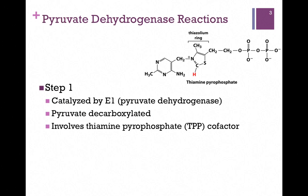Here we have step one. It is catalyzed by the first enzyme in this complex, simply referred to as E1. The name of the enzyme is pyruvate dehydrogenase, and that's where the name of the complex comes from. The only name you need to know in this process is this enzyme, and therefore the name of the complex, pyruvate dehydrogenase. The other enzymes we'll simply refer to as E2 and E3. The goal of enzyme 1, or pyruvate dehydrogenase, is simply to decarboxylate pyruvate.